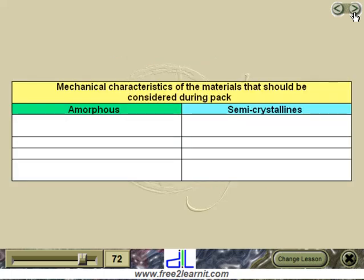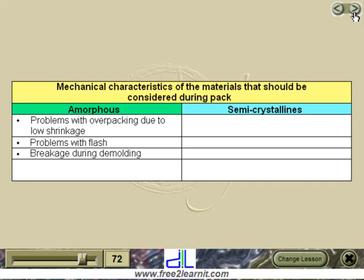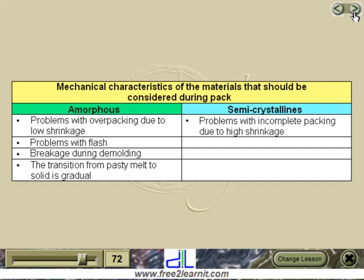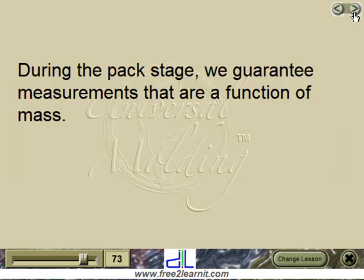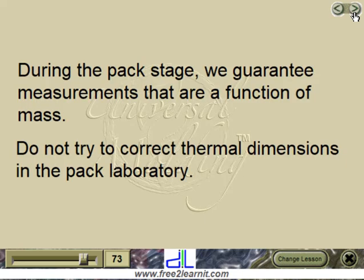Mechanical characteristics of materials to consider during pack: amorphous materials present problems with overpacking due to low shrinkage, problems with flash, breakage during demolding, and a gradual transition from pasty melt to solid. Semicrystallines present problems with incomplete packing due to high shrinkage, sunken areas and holes, easy demolding, and a quick transition from liquid melt to solid. During the pack stage, we guarantee measurements that are a function of mass — do not try to correct thermal dimensions in the pack laboratory.